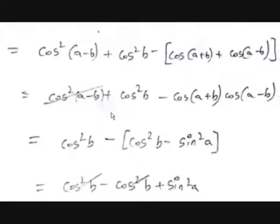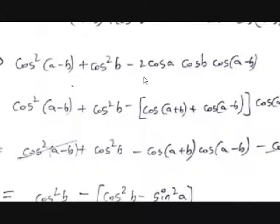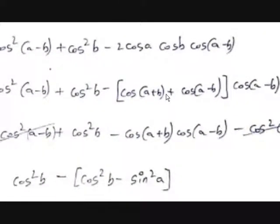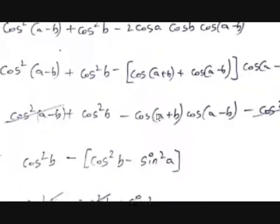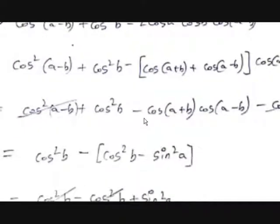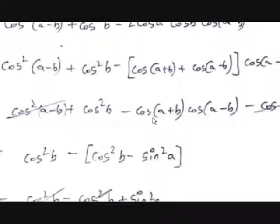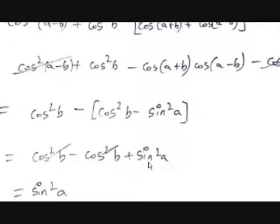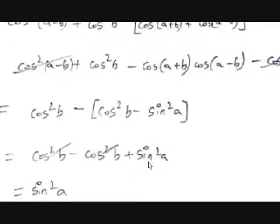If you observe carefully, we broke it down step by step. First, we used the 2 cos A cos B formula, then the cos(A+B)·cos(A−B) formula, and then simplified. Always remember: do not forget the signs — if you forget the signs, the whole problem becomes wrong.